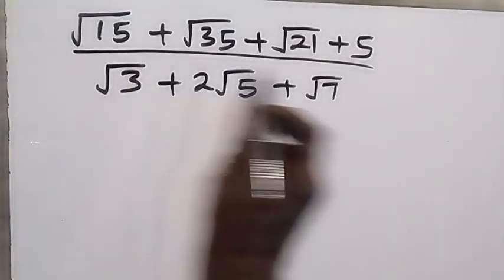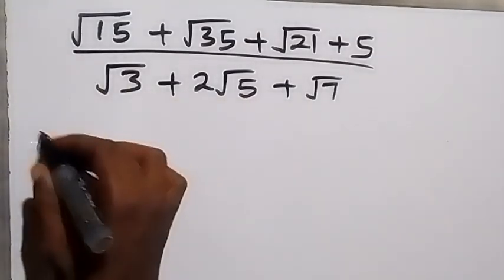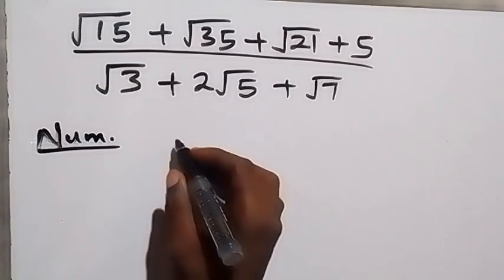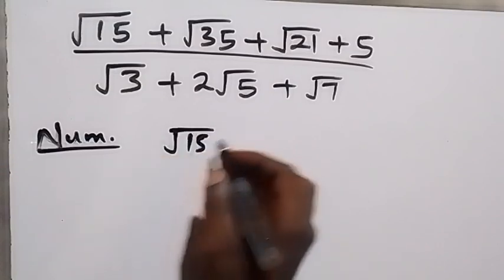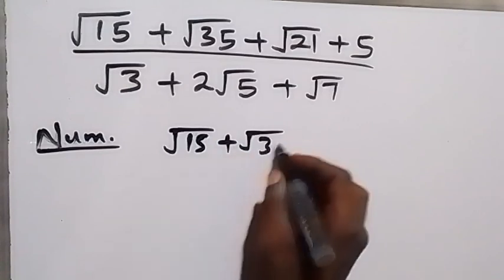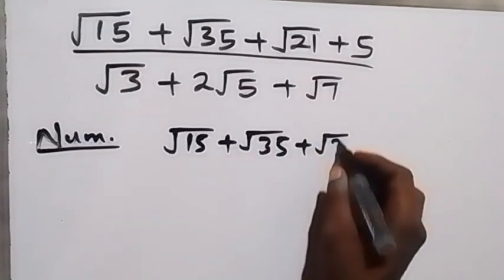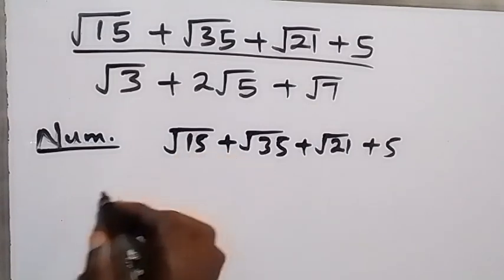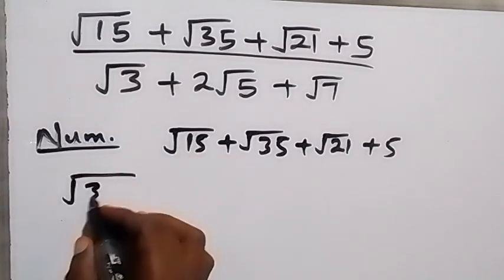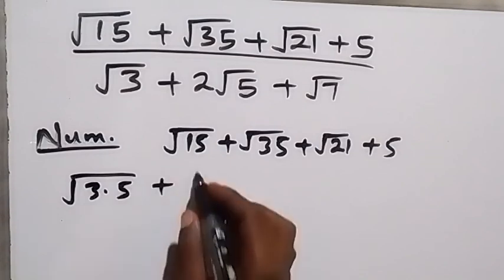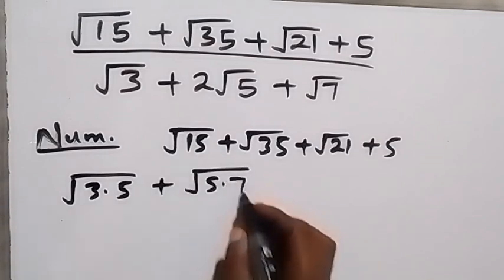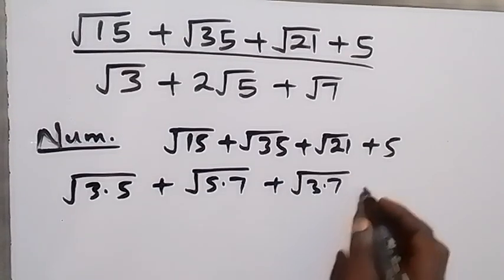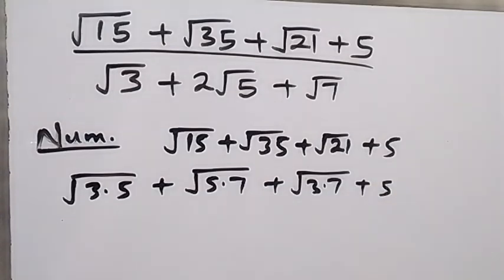From here, let's solve the numerator first. From the numerator we have √15 + √35 + √21 + 5. We can simplify this: √15 can be written as √(3×5), then √35 can be written as √(5×7), plus √21 can be written as √(3×7), then plus 5.